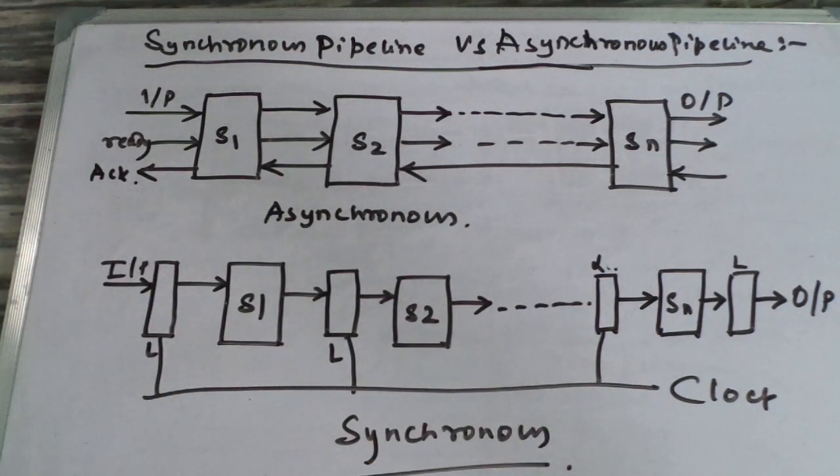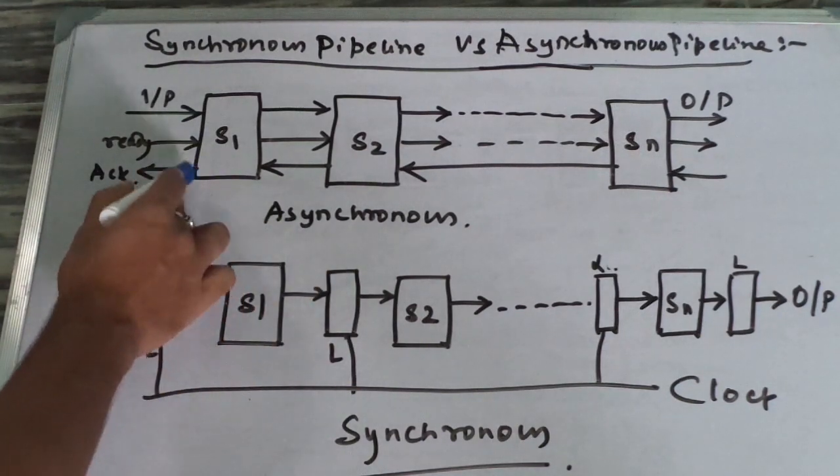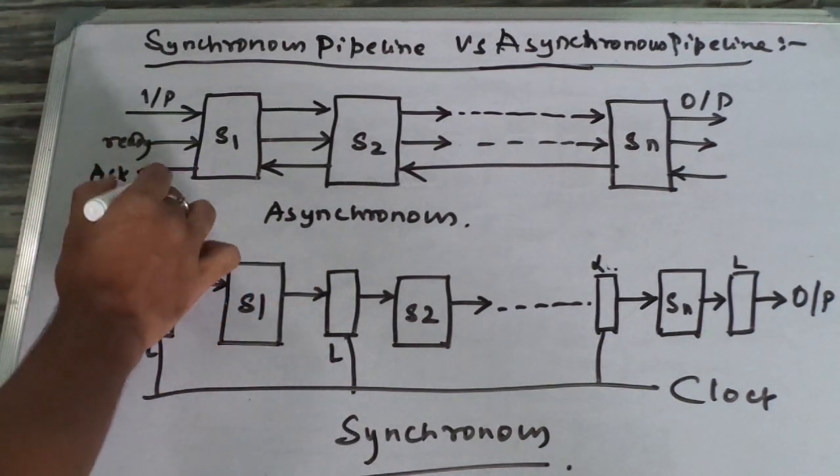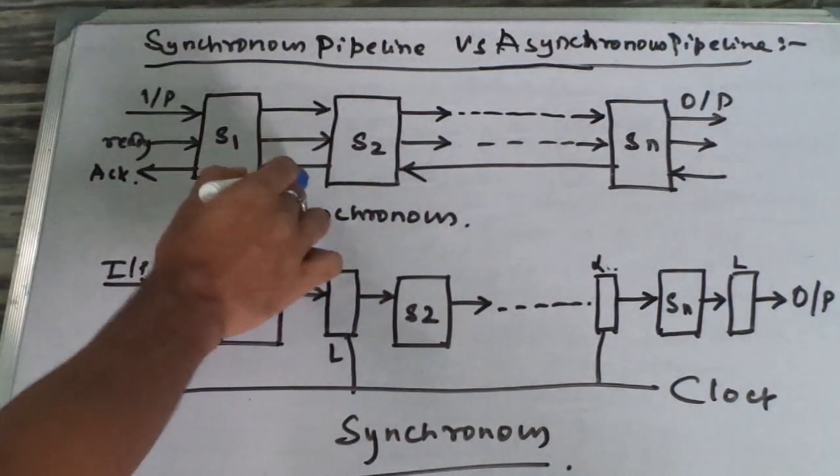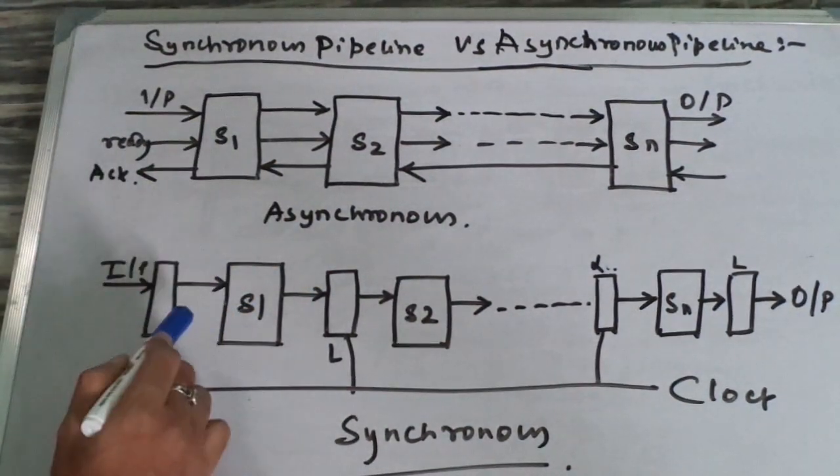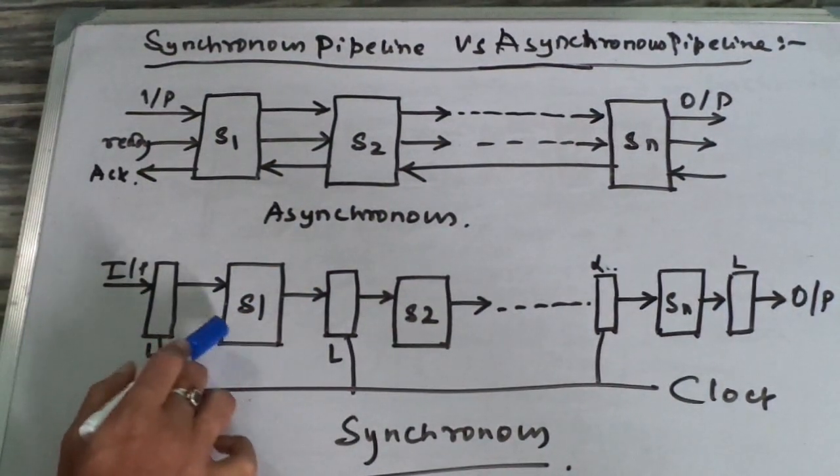And there is another difference: we use a feedback line for acknowledgement in asynchronous pipelines. But in synchronous, no feedback line is used.